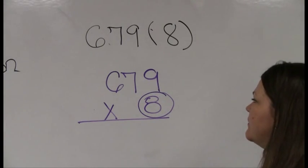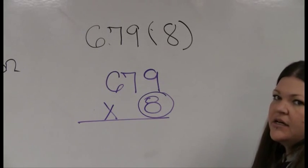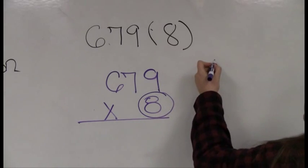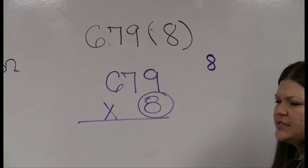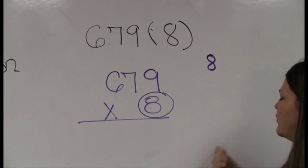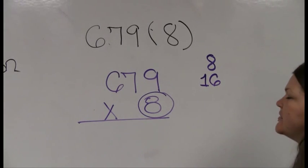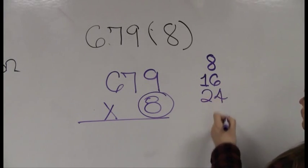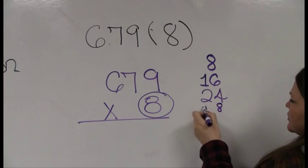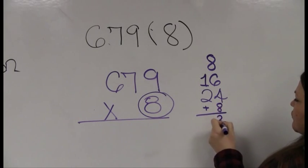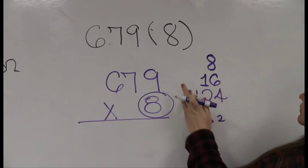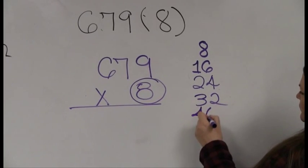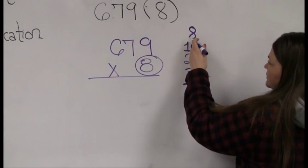Remember, multiplication is just repeated addition. I can add the number repeatedly down the side of my paper to build up my eight times tables. The first is just eight, then I count by eight: 16, 24, 32, 40. Notice something — eight is an even number, so all these numbers are even. If you get any odd number in this list, you've gone astray.